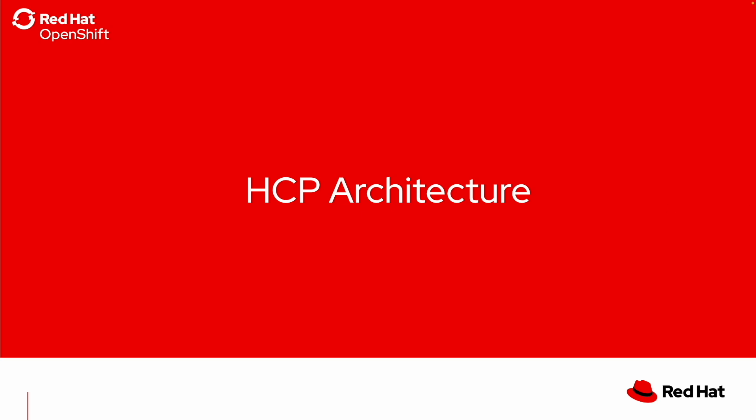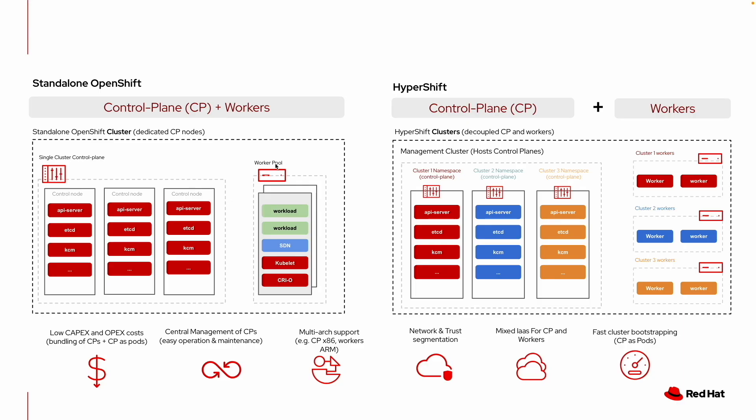Let's compare the standalone OpenShift cluster with HyperShift. In a standalone setup, you have a single cluster consisting of control plane nodes and a worker node pool, which can scale based on your requirements. In a standalone cluster, the control plane is hosted by a dedicated group of nodes, which can be physical or virtual.